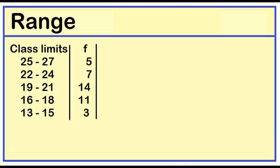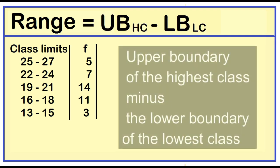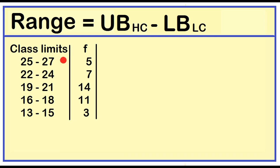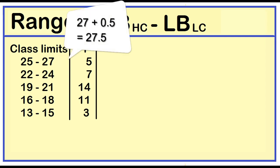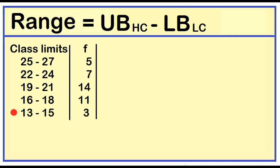How to find the range. The range is just the difference between the upper boundary of the highest class minus the lower boundary of the lowest class. The highest class is 25 to 27. To find the upper boundary, just add 0.5 to the upper limit. 27 plus 0.5 is 27.5.